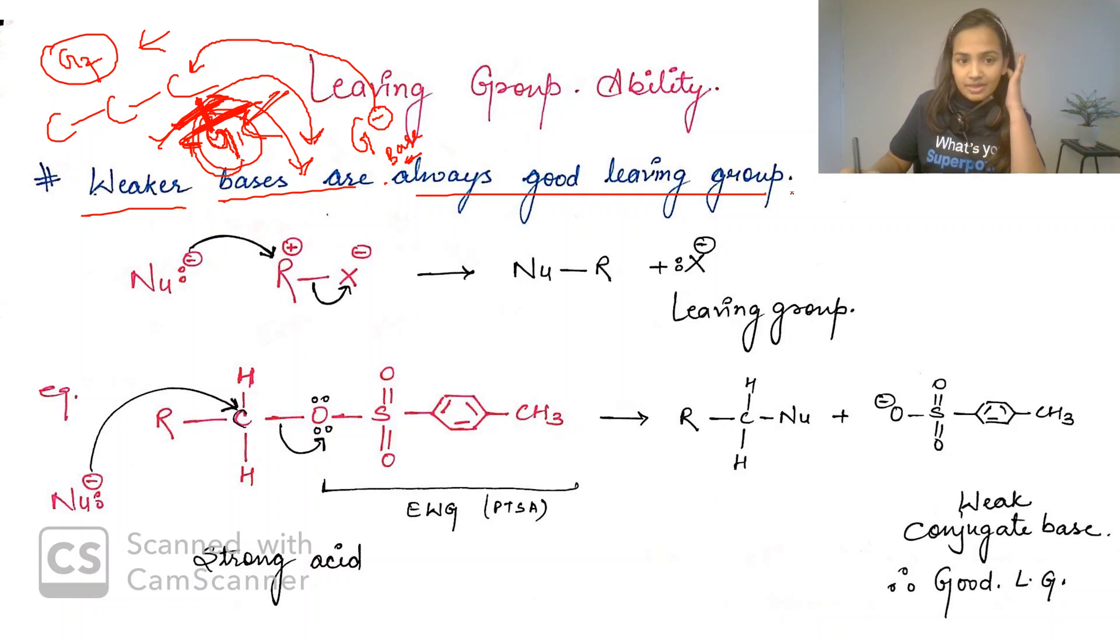For example, if we have R-X, this X is a good leaving group because it's more electronegative. It will withdraw the shared pair of electrons and become negative. It's a weak base, considering chloride, bromide, or iodide - not fluorine because fluorine is a strong base. Halogens are generally good leaving groups because of their high electronegativity.